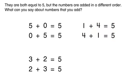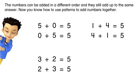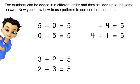They are both equal to five, but the numbers are added in a different order. What can you say about numbers that you add? The numbers can be in a different order, and they still add up to the same answer. Now you know how to use patterns to add numbers together.